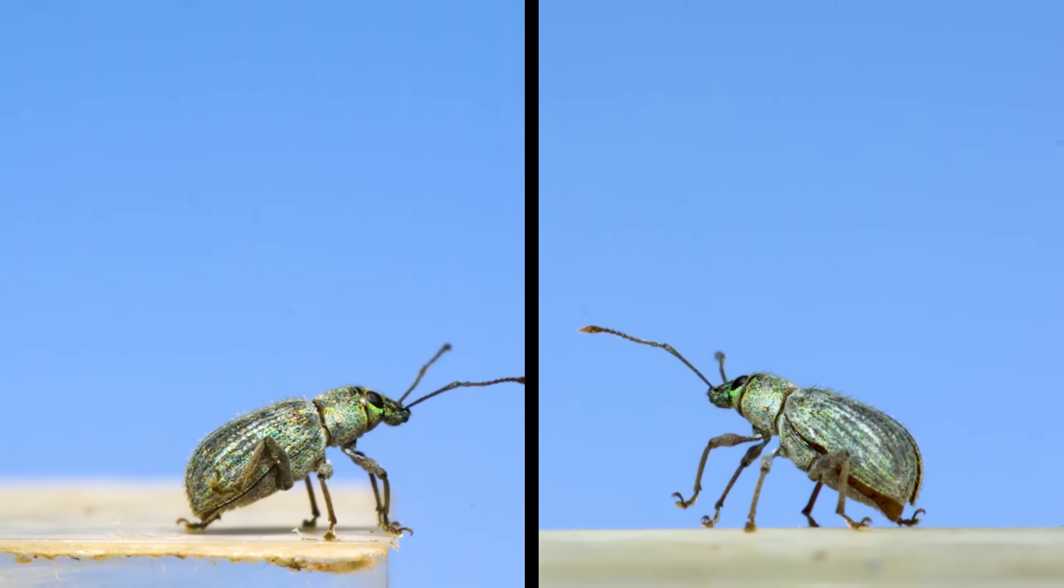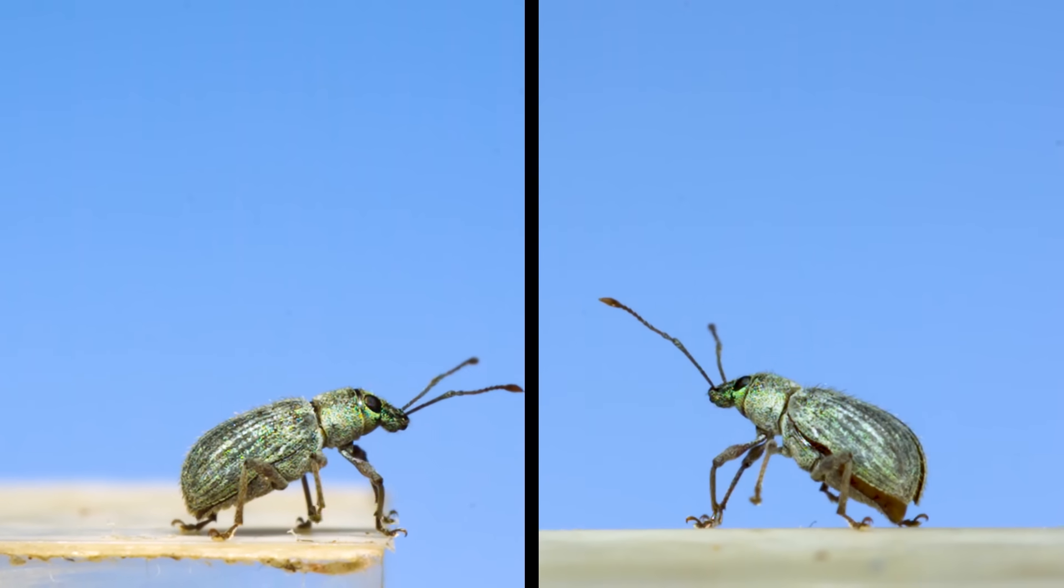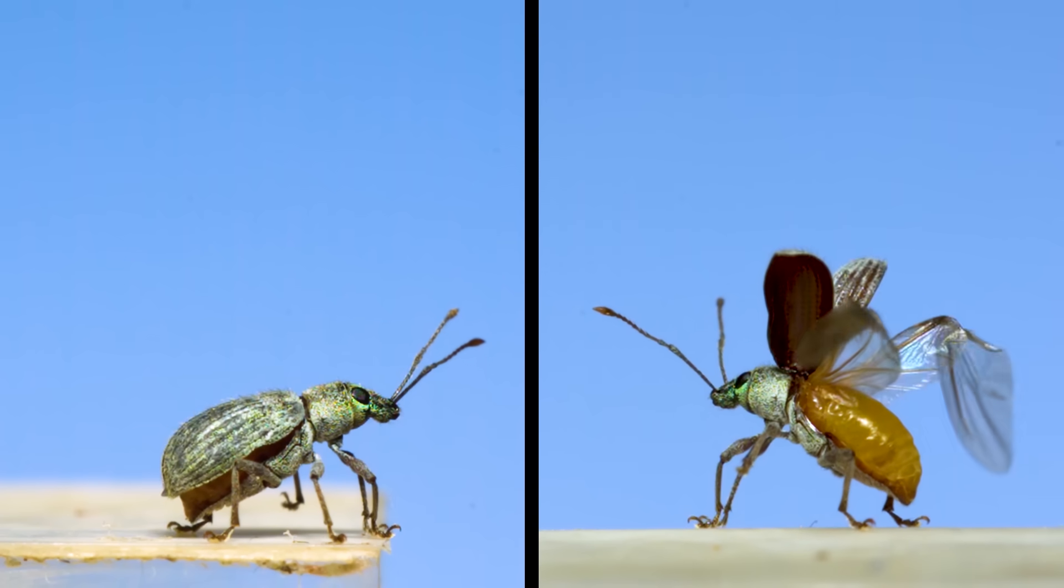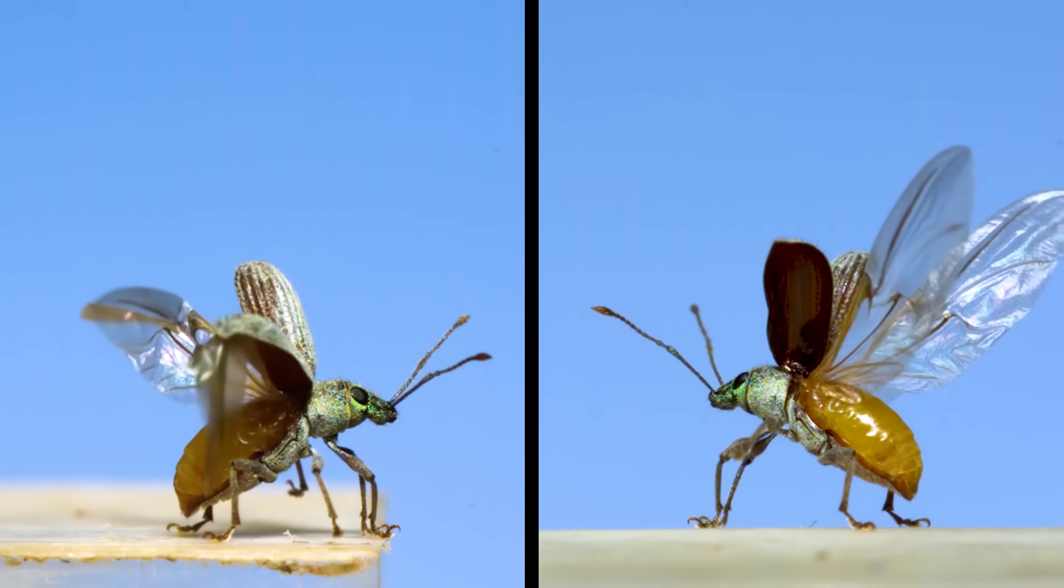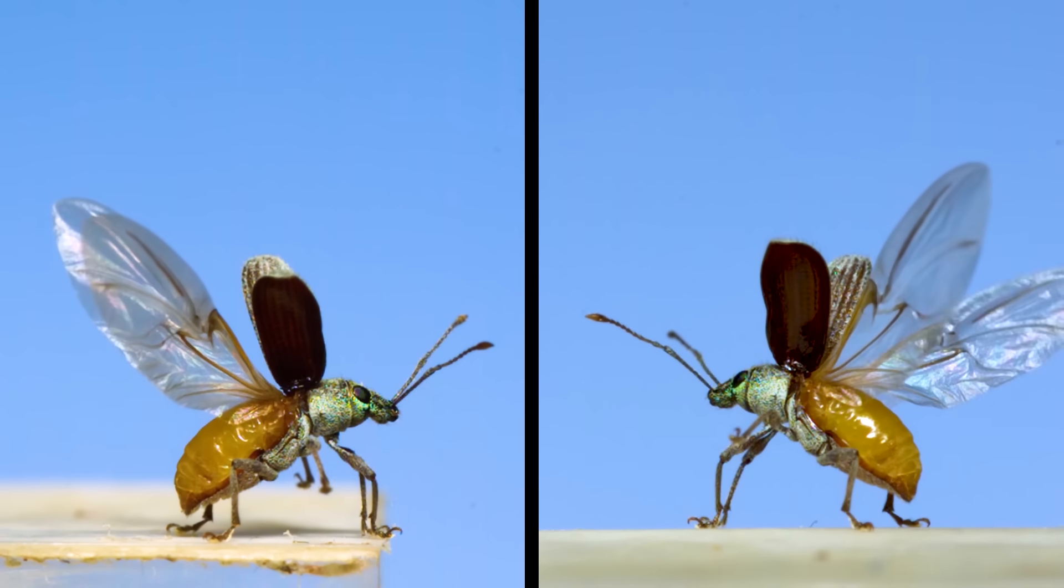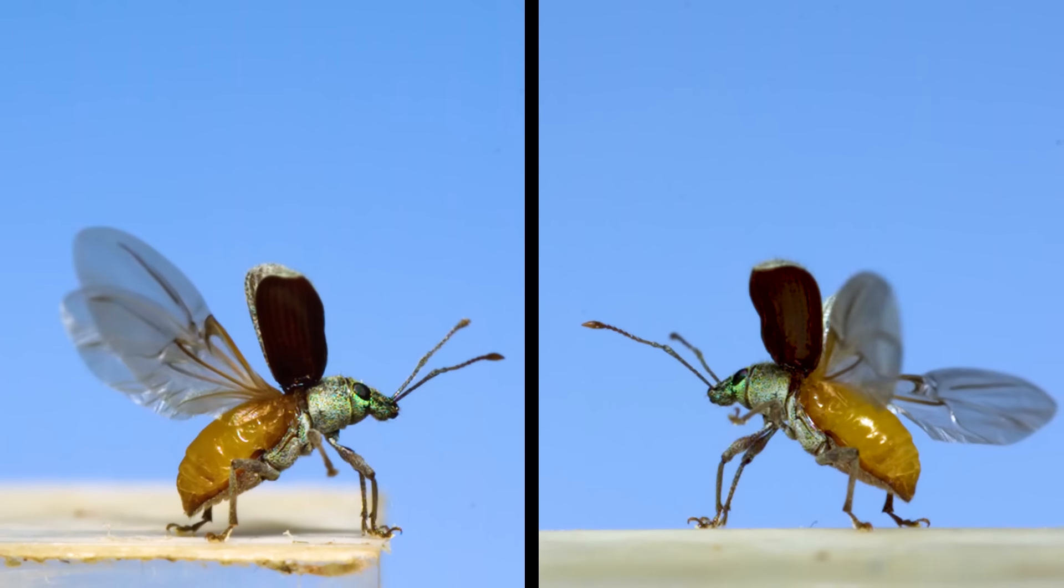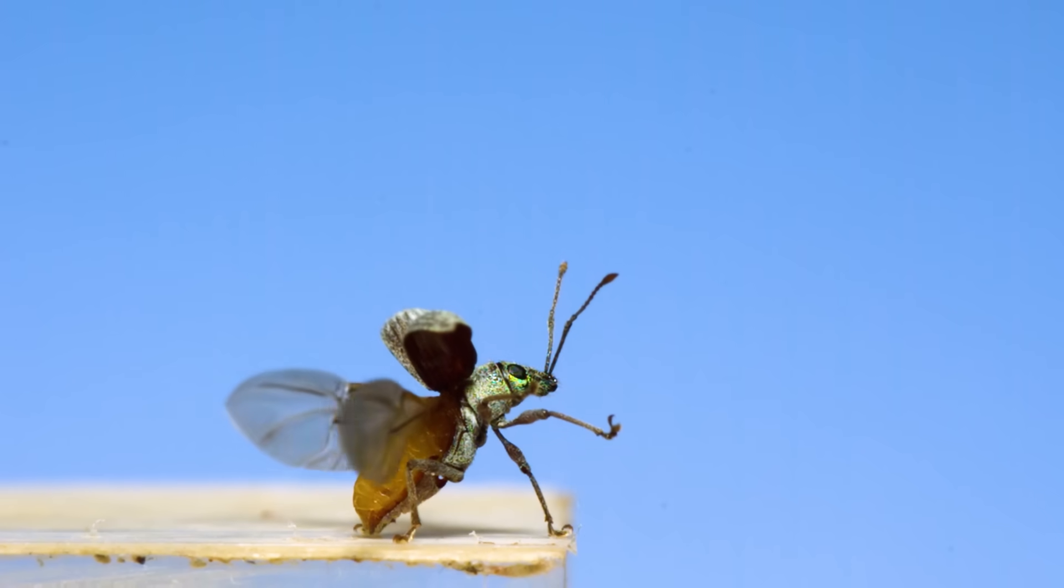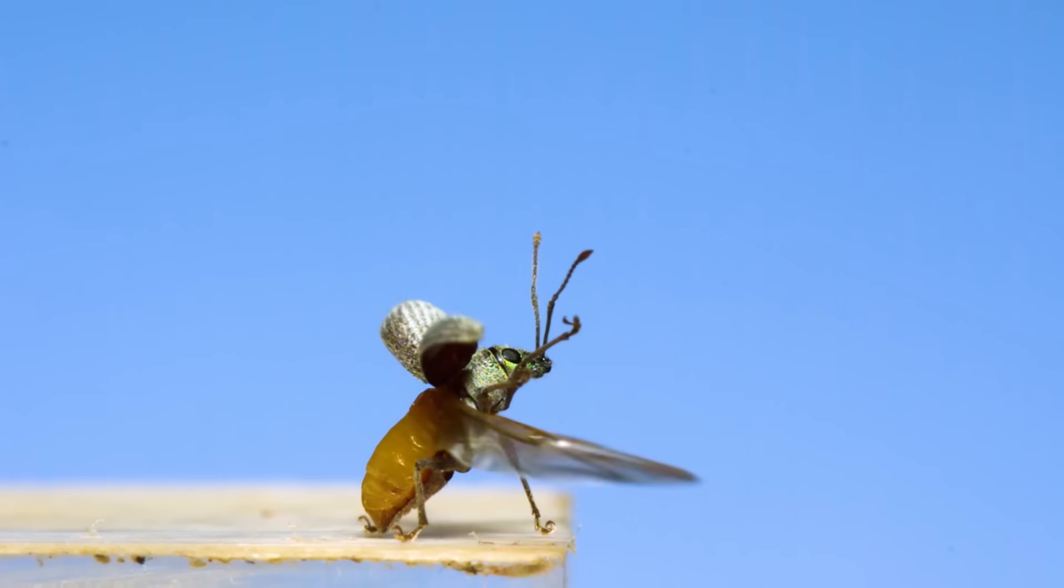This is a smaller broad-nosed weevil and its hind wings use a similar folding pattern straightening out to expand way beyond the length of the body. Getting off the ground looks similar too. Hold the legs out and let the wings generate the lift.